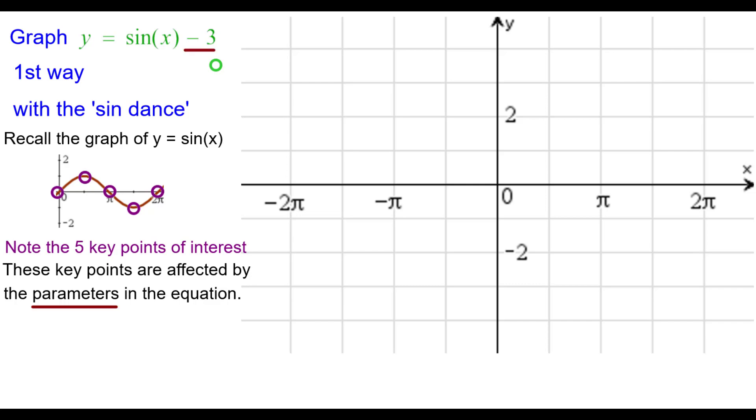These key points are affected by the parameters in the equation as all the points on the curve are affected. The only parameter is minus 3 outside the function and so that minus 3 shifts all points down 3 units. So it affects the y coordinates.